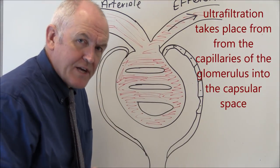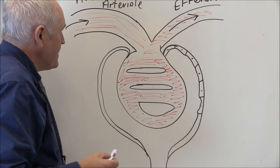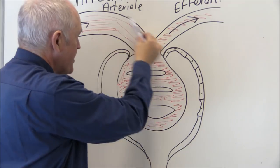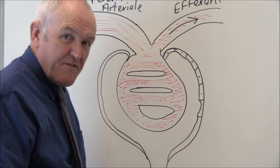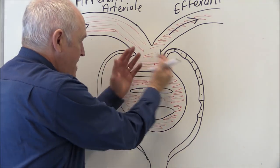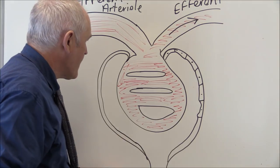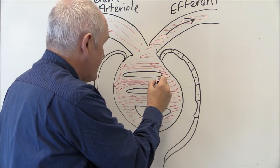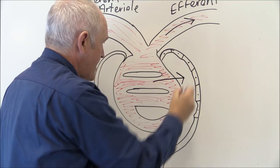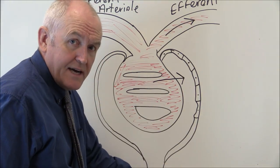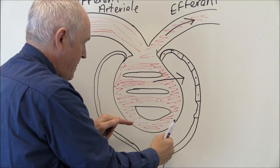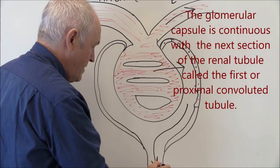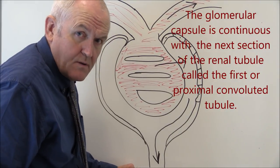Let's think about how the glomerular filtrate is formed. The pressure in the afferent arteriole is relatively high, and the pressure going into these capillaries is going to be about 55 millimetres of mercury. That will vary depending on which part of the glomerulus you're considering, but it's in that order. So there's a hydrostatic pressure of 55 mmHg pushing water and filtrate out into Bowman's space, from where it can pass down into the proximal convoluted tubule.